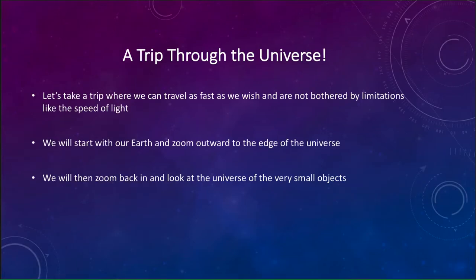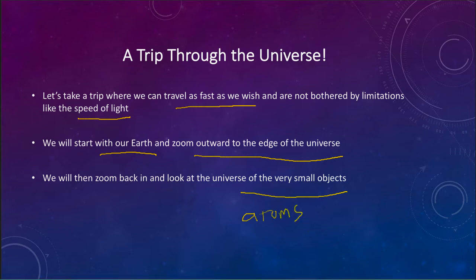So what we'll look at is essentially we'll take a trip, and the nice thing about taking a trip like this is that we can go as fast as we want. There is no limit here, we're not limited by the speed of light. Even if we could travel at light speed, it would take us four years to get to the nearest star and two and a half million years to get to the Andromeda galaxy. Now we can travel even greater distances in a much shorter period of time. When we start off, we'll start out on our own Earth with things that we're actually familiar with. We'll zoom outward to the edge of the universe, and then we can come back in and look at the universe of very small objects, things like atoms.